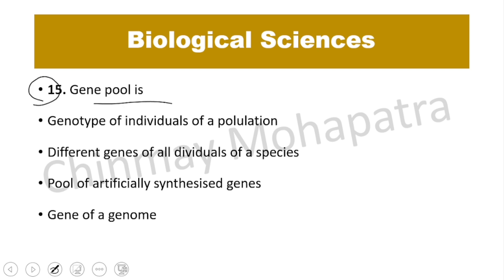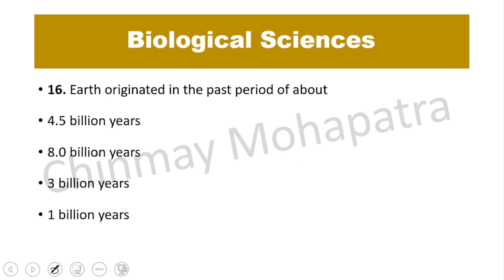Question number 15. Gene pool is? The right answer is the different genes of all individuals of a species — that is, all genes of all individuals of an interbreeding population.